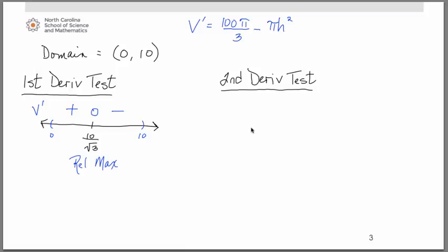What if we wanted to prove the critical number we obtained was a relative maximum by using a second derivative test? Remember then we will go ahead and find our second derivative, which simply would be, working from our first derivative up here, -2πh.